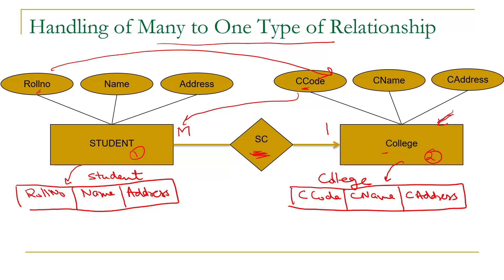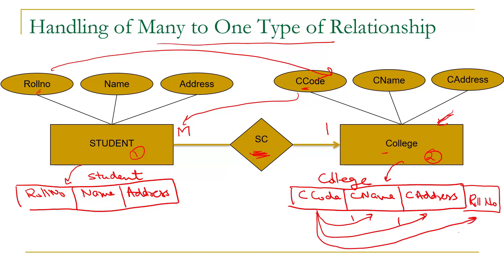Strategy one: move row number into the College table. For every college code there would be multiple row numbers. As discussed previously, we cannot store a column having multiple values for a primary key. This is not allowed and not recommended in the relational model, as we would lose advantages like simplicity in insertion, updation, and deletion. So this strategy is not allowed.